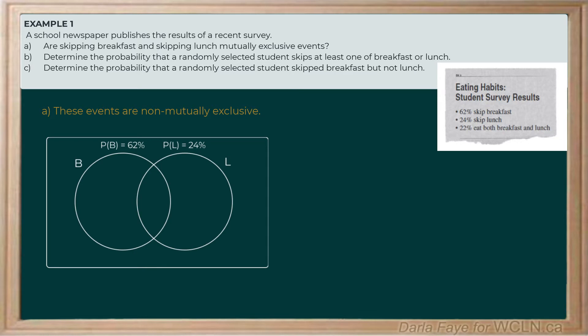Remember, there's 22% of students that ate both breakfast and lunch, which means they neither skipped lunch nor skipped breakfast. So these 22 outcomes will be on the outside of events B and L, and I'll place them there in my Venn diagram.